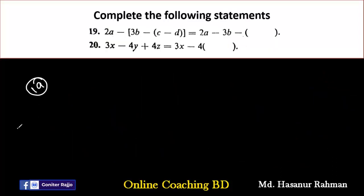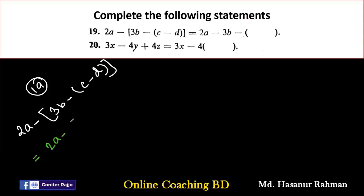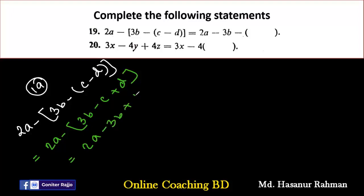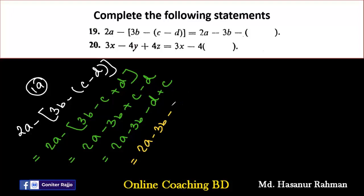Now number 19. Number 19 says: 2a minus (3b minus (c minus d)). First remove the inner bracket: 3b minus c minus into minus d gives plus d. Then remove the outer bracket: 2a, minus into 3b gives minus 3b, minus into minus c gives plus c, minus into plus d gives minus d. So 2a minus 3b, and after the negative sign we add a bracket: minus (d minus c). That is the answer of number 19.